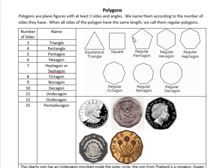Five sides is a pentagon. You may have played a game called pente — that prefix means five. A hexagon has six sides. Hexagon is the shape of a honeycomb. If you've ever looked at a honeycomb, bees use hexagons because they're the most stable or sturdy shape for building something like that.